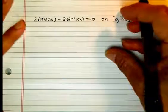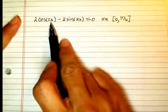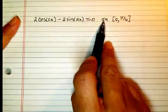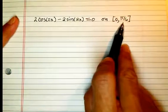All right, are we ready to solve this one? 2 cosine of 2x minus 2 sine of 2x equals 0 on 0 to pi over 6.